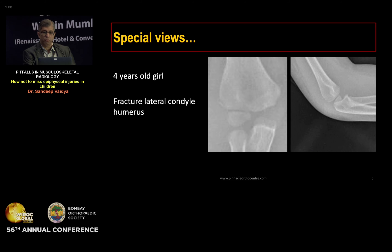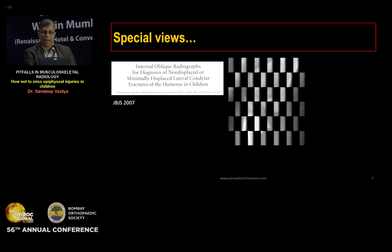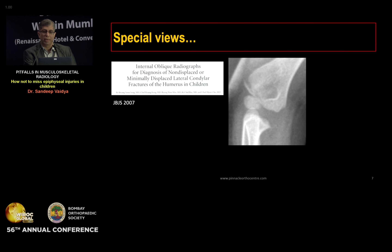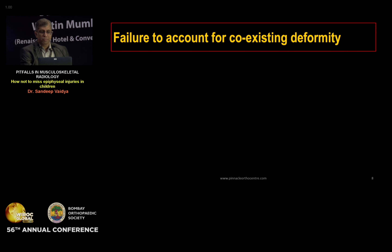That's the basic rule: obtain two orthogonal views to diagnose any condition. However, sometimes AP and lateral views alone don't help. Consider this case of a four-year-old girl with fracture of the lateral condyle of the humerus. It looks like an undisplaced fracture treatable conservatively, but displacement in lateral condyle fractures is best assessed on internal oblique views.